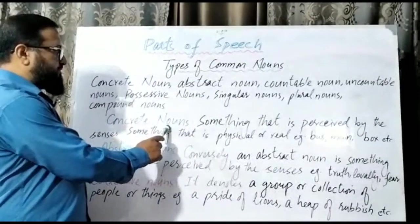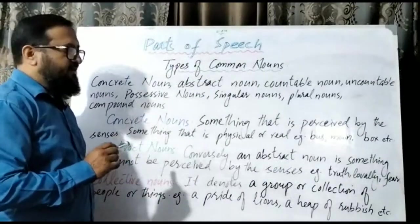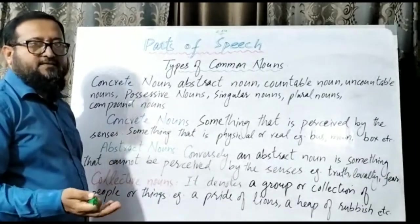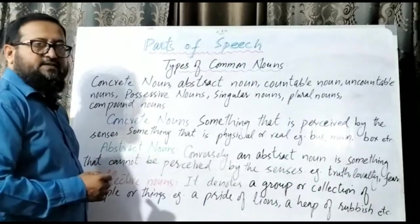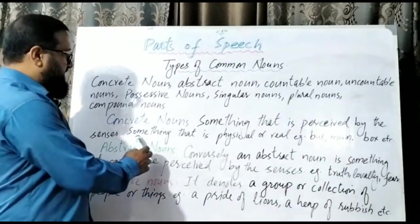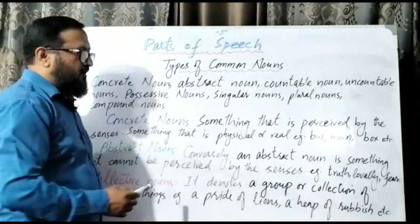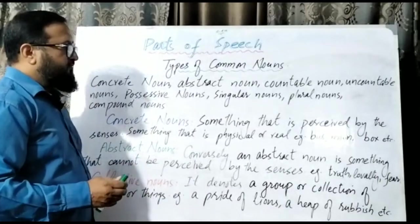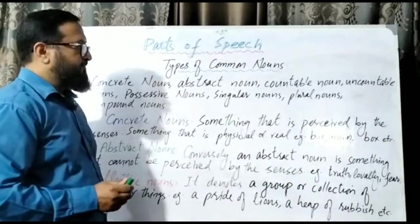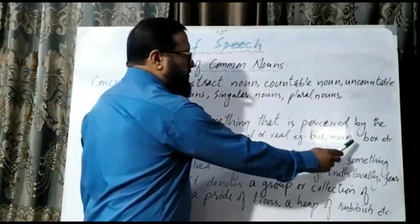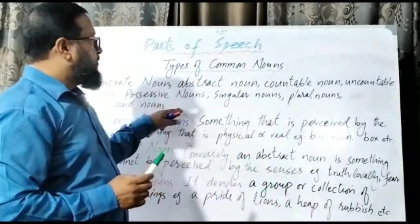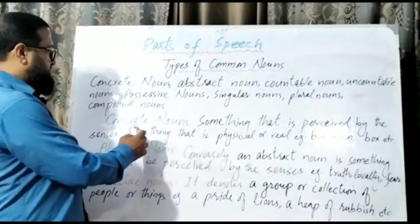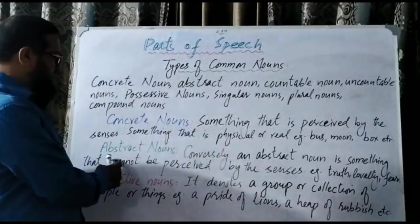Concrete nouns are things perceived by the senses — we have five senses and we can perceive these things with their help. Something that is physical or real; these are real things we can physically see or touch. Examples include: bus, moon, box, marker, board.